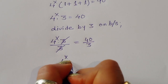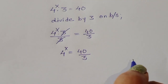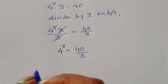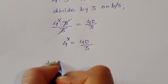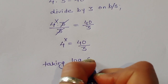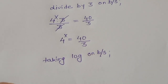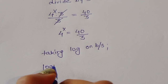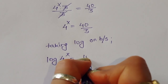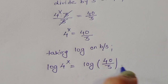4^x times 3 divided by 3 equals 40 divided by 3. The 3s cancel, so 4^x = 40/3. Now we take log on both sides, giving log(4^x) = log(40/3).